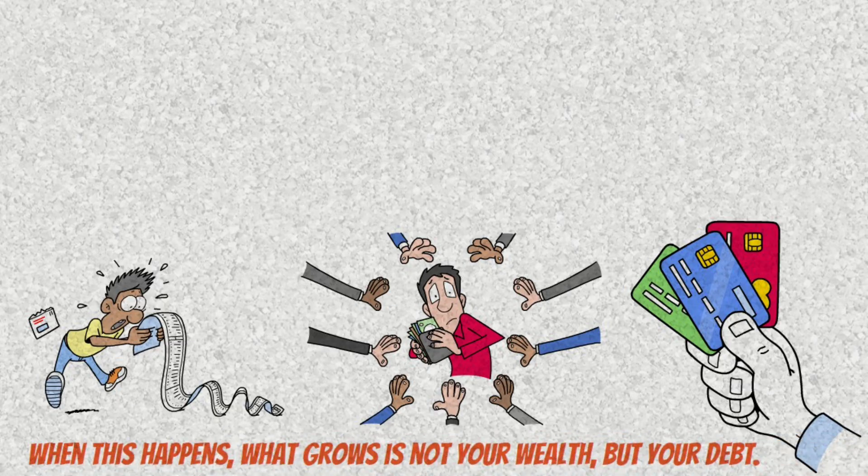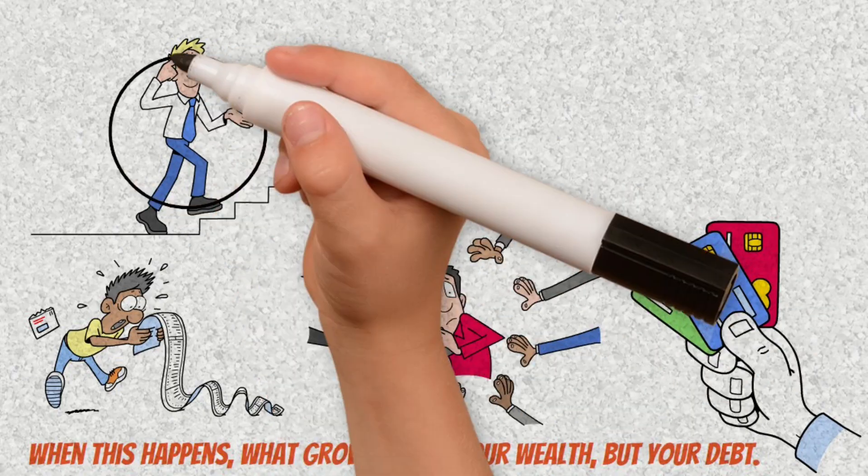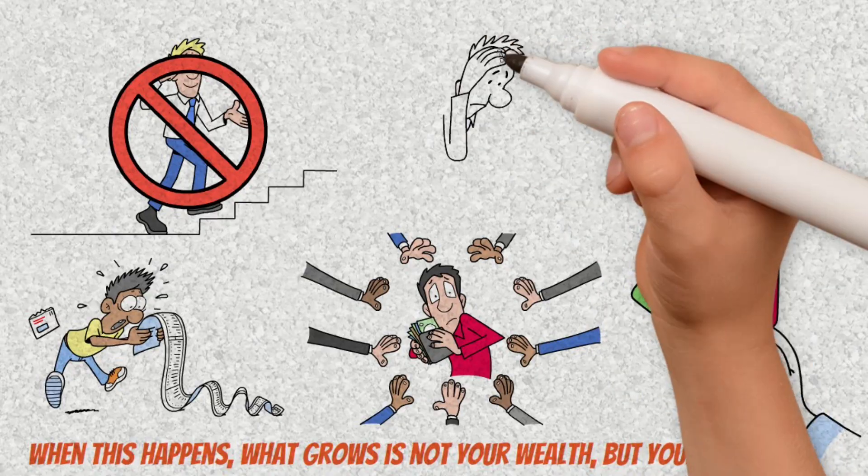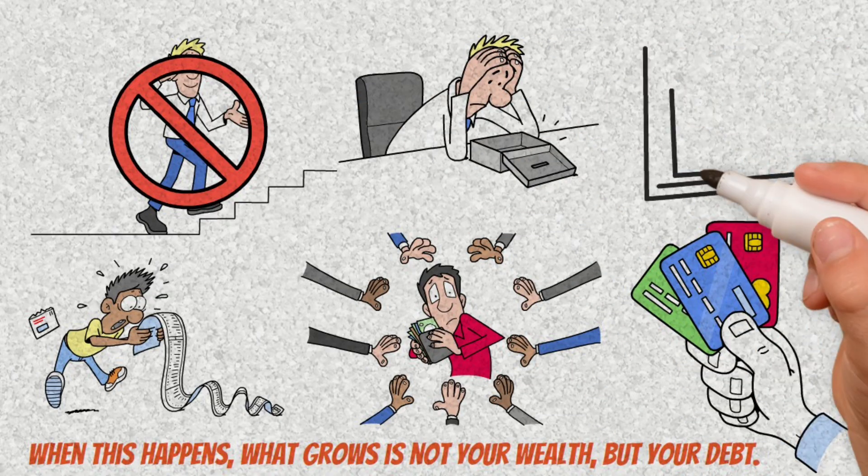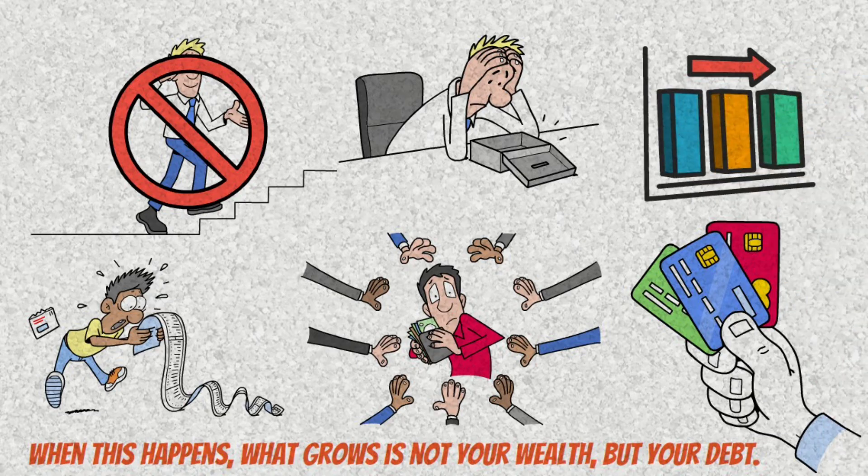The third enemy is lack of consistency. Skipping contributions, investing irregularly, or stopping reinvestment breaks the rhythm needed for the 8-4-3 rule to work. Growth stops being exponential and becomes linear, slow, and limited.